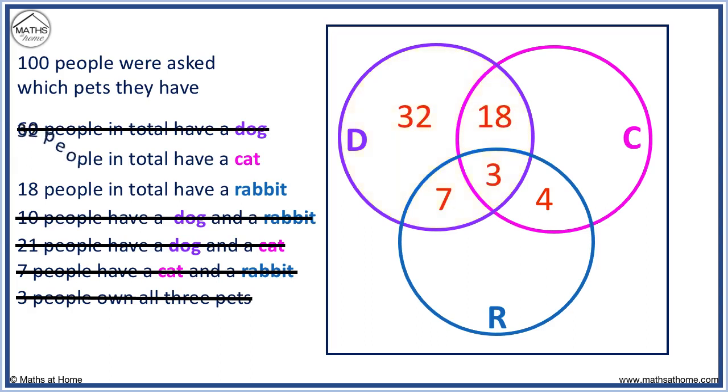32 people have a cat. Already, we have 4 plus 18, which equals 22, and plus 3 equals 25. We need 7 more to make a total of 32.